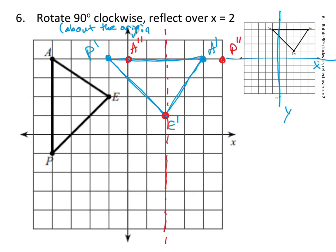And that's where p double prime is. And then e down here is on the line. So it's not going anywhere. So I got e double prime. Now I can connect up my vertices. And I have transformed my shape twice. I've done multiple transformations. So that's what's going on with this assignment.